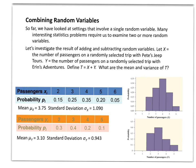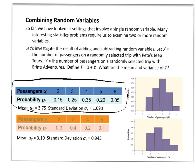We want to calculate the mean, the variance, and eventually the standard deviation of putting these two events together. We collect data from Pete, and this table represents Pete's information. The probability of having two passengers on any one day is 15%, three passengers is 25%, up to as many as six passengers, which happens 5% of the time. To calculate the mean, we multiply the number of passengers by each corresponding probability — 2 times 0.15, 3 times 0.25, 4 times 0.35, etc. — then add them up. The mean is 3.75.